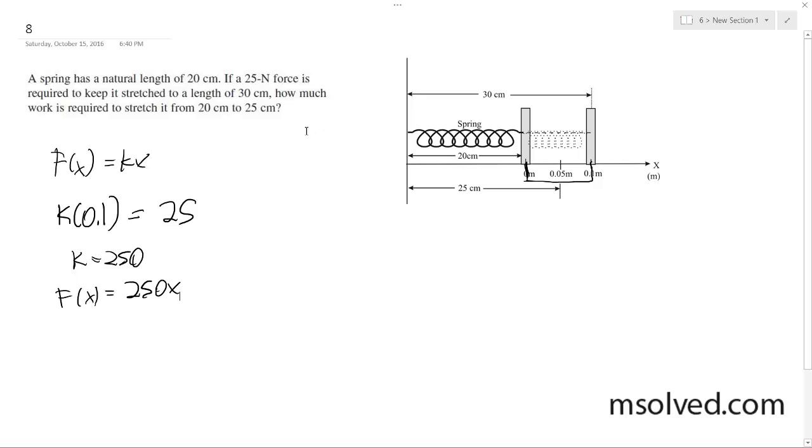Using that, we can now use our integral. So we want to know based off of that how much work is required to take it from 20 to 25. Basically, it's just moving 5 centimeters. So we're going 0 to 0.05. Not very far, but we got a large constant value. So we get 250.